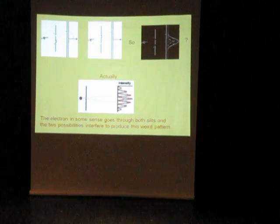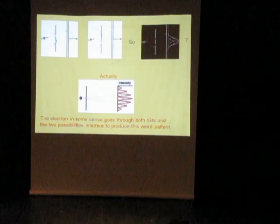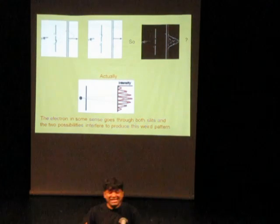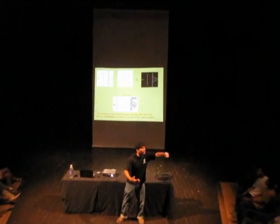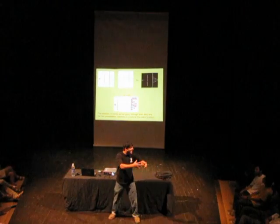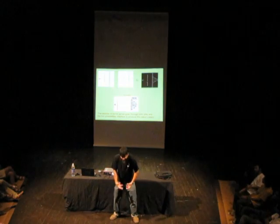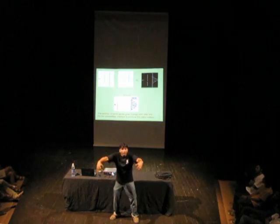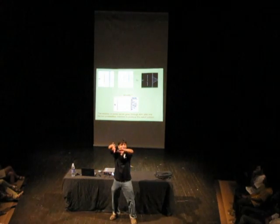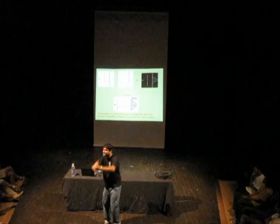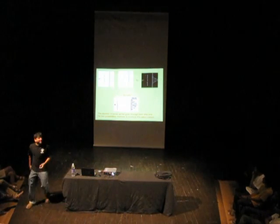We understand why that happens using the mathematical rules of quantum mechanics. It works because it's just not true that any given electron goes through either one hole or the other. The electron is not located in a particular position. Any given electron goes through both holes, and the interference of these two possibilities gives you this weird pattern. It's basically wave interference.